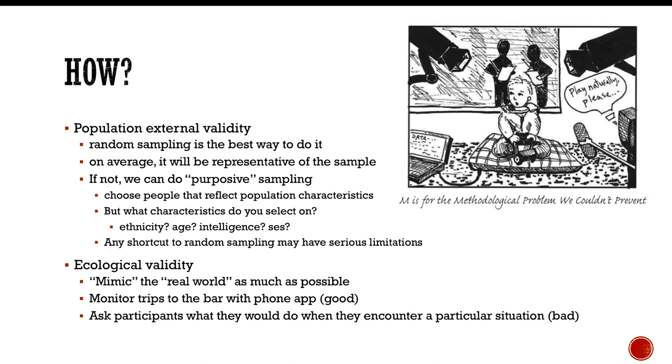So on average, if we do random sampling, it will be representative of the population. And the problem is, like I said, that's extremely hard to do. So in those situations, we do what's called purposive sampling. So we specifically choose people that reflect population characteristics. So an example of purposive sampling is stratified random sampling, where you know that the demographics of the United States are x percentage Caucasians, x percentage Native Americans, x percentage African Americans, etc. And then you purposively select African Americans, and Asians, and Native Americans, and those sorts of things, such that the proportion of people in your sample is approximately equal to the proportion of people in the United States.